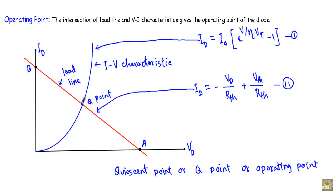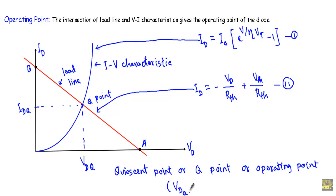The Q point will have coordinates equal to VDQ and IDQ. The Q point, or operating point, is obtained by the intersection of the load line and the V-I characteristics of the diode. That's it. Thank you.